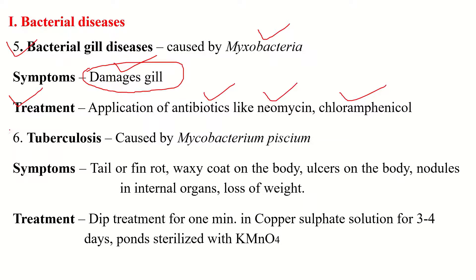The sixth bacterial disease is Tuberculosis, caused by Mycobacterium. Symptoms include tail or fin rot, a waxy coat on the body, ulcers on the body, nodules in internal organs, and loss of weight. These are the common symptoms of bacterial Tuberculosis in fish.